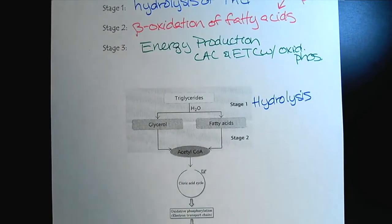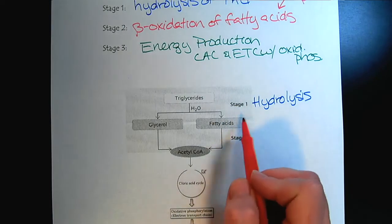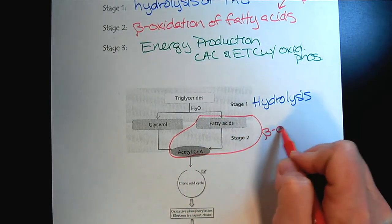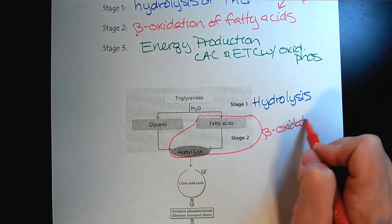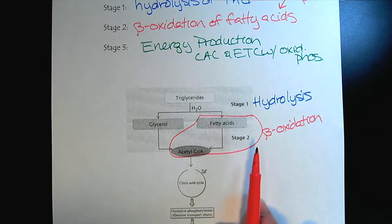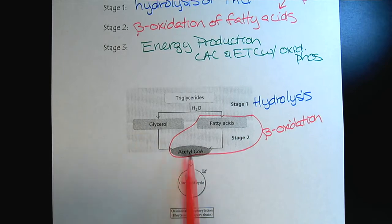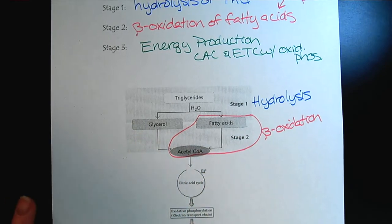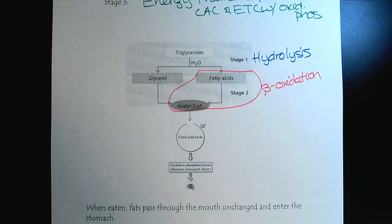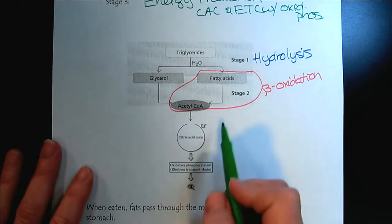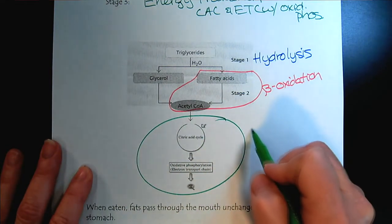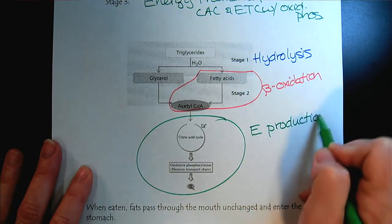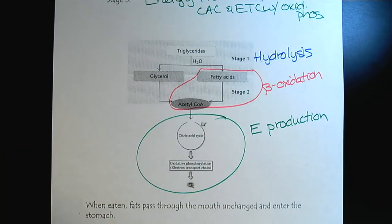And then the fatty acids, this is the part we're interested in here, that'll be the beta-oxidation. So this is the new part that we'll learn in this chapter. We're not going to focus on how glycerol gets to acetyl-CoA. And then, of course, the last part is stage 3, where we have energy production.